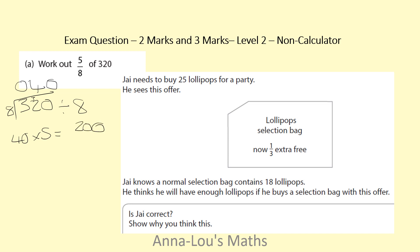This was a two mark question. Mark one was for your process — knowing you need to divide by eight to find one eighth. Mark two was for finding your five-eighths, which is 200.